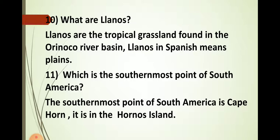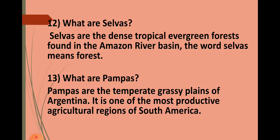Question number eleven: Which is the southernmost point of South America? The southernmost point of South America is Cape Horn. It is in the Hornos Island. Question number twelve: What are selvas? Selvas are the dense tropical evergreen forests found in the Amazon river basin. The word selvas means forest.